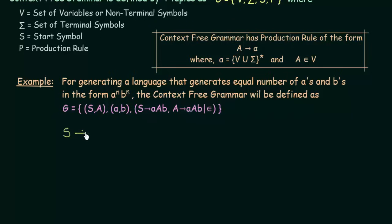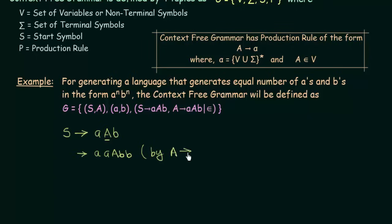Starting with the start symbol S, we apply S → aAb. Then using the production rule A → aAb, we replace the A to get aAAbb. Expanding further using the same production rule, we replace one A again with aAb, giving us aaaAbb b. This continues by repeatedly applying A → aAb.